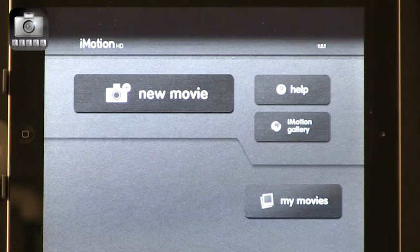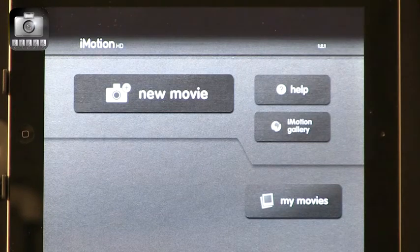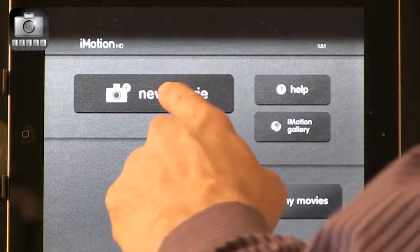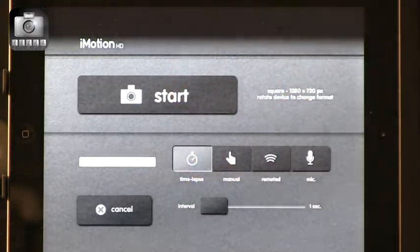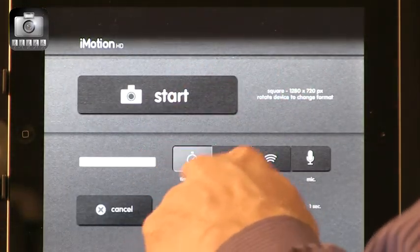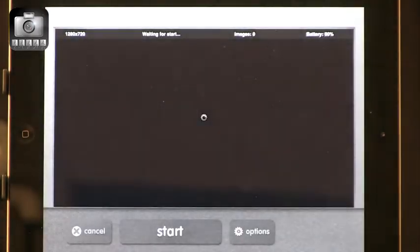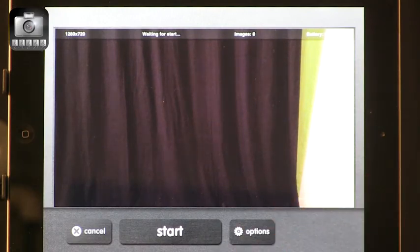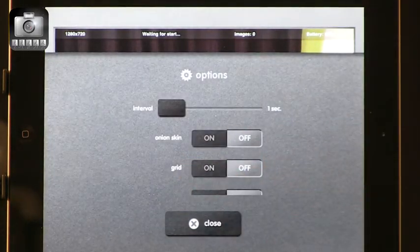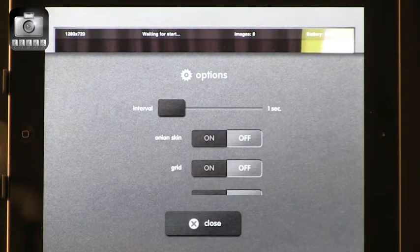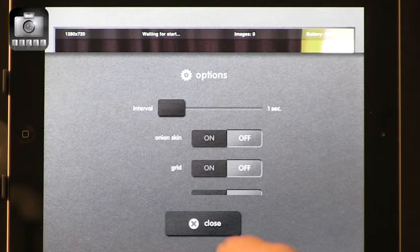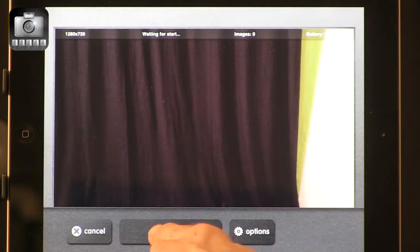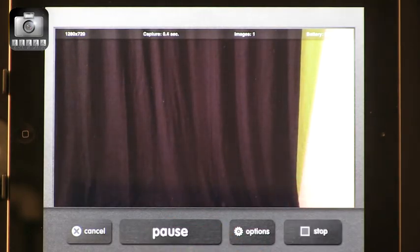This is iMotion HD and iMotion allows you to create a movie. So you press new movie, it's fairly easy. This is time lapse and you press start. You see the scene that is in front of the camera and you can change the options of how you take the pictures, and you can start.